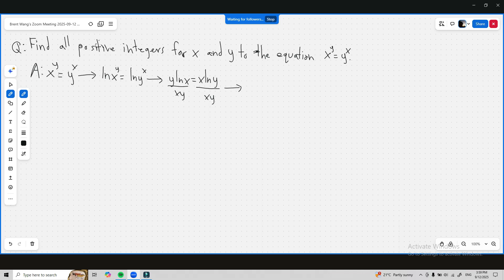And we're left with ln x over x is equal to ln y over y. And if you notice they look very similar, these two sides of the equation.